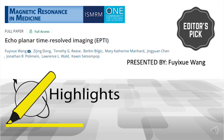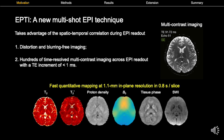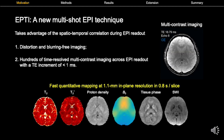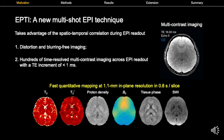Hello everyone. My name is Fuyu Shue Wang. I'm going to present a quick summary of a recent MRM paper entitled Ecoplanar Time Resolved Imaging. The motivation of this work is to address the limitations of EPI by developing a new multi-shot EPI technique that takes advantage of the spatial and temporal correlation during EPI readout, providing distortion and blurring-free imaging, as well as hundreds of time-resolved multi-contrast images across EPI readout with a TE increment of less than one millisecond.